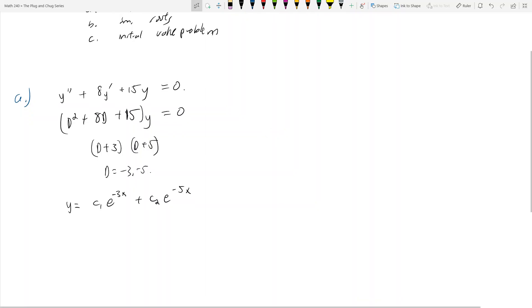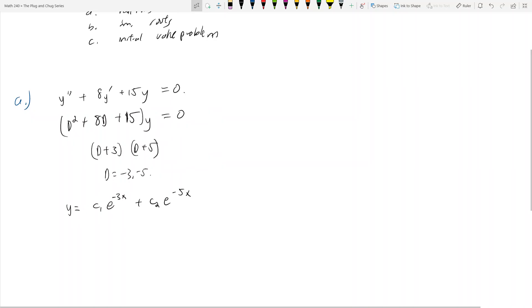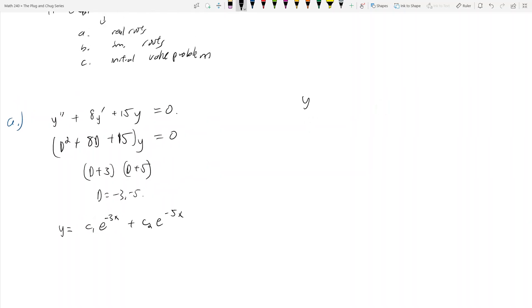Cool beans. That was very simple. Let's take another look at this. Let's say I have y double prime minus 4y prime plus 4y equals 0.